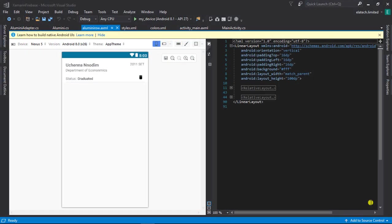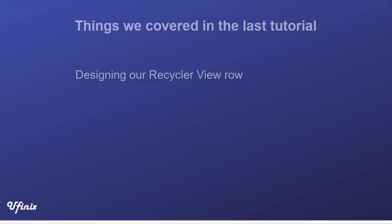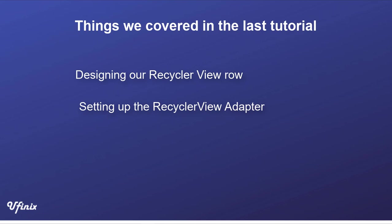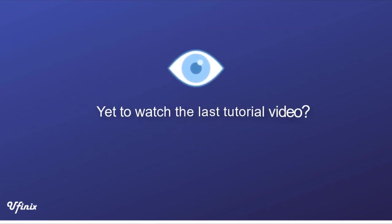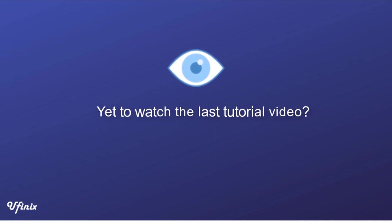Hey guys, welcome back to this series. In the last tutorial we were able to set up our RecyclerView, which includes designing the row and setting up our RecyclerView adapter. We also went ahead to create some dummy data and bound it to our RecyclerView. If you haven't watched the last tutorial, I'd advise that you watch it first, then come back and continue with this one.